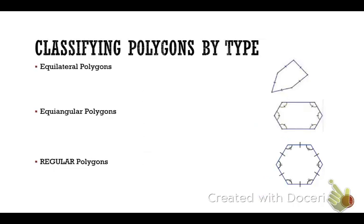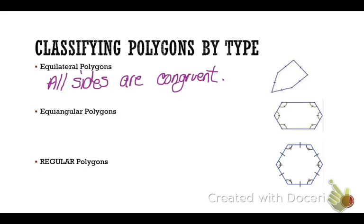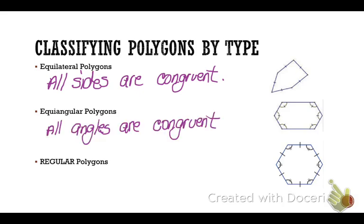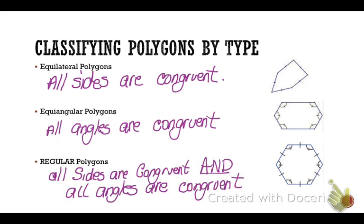The last way to classify polygons is by type. If all of the sides of a polygon are congruent, that is called an equilateral polygon. If all of the angles are congruent, that's called an equiangular polygon. And if a shape has all sides congruent and all angles congruent, we call that a regular polygon. We will use this term a lot, so make sure you have these memorized.